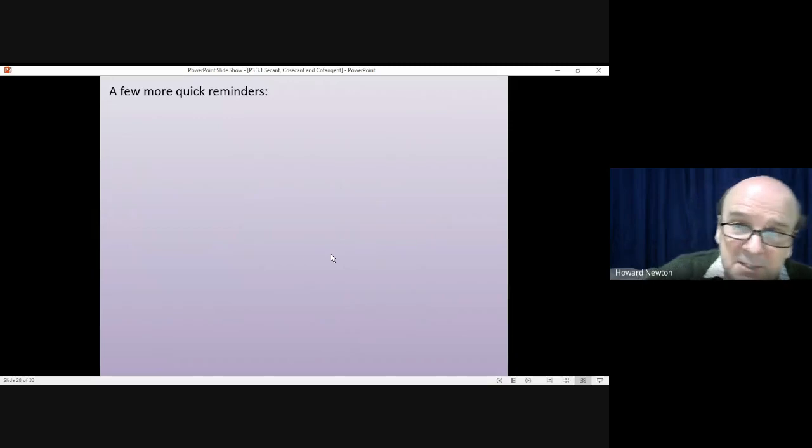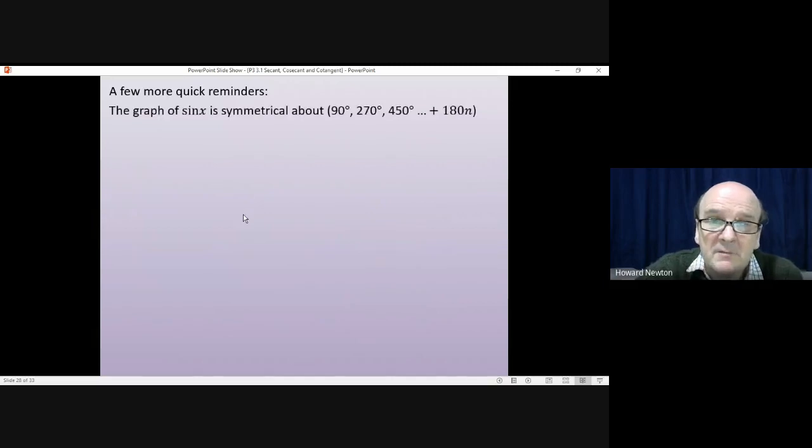A few more quick reminders that you will need to remember to do the questions that are coming. There's quite a lot of them, actually. First of all, the graph of sine x. It's symmetrical about various points. It's symmetrical about 90 degrees, about 270, about 450, and you could keep on adding at 180 degrees, multiples of 180. And you'd get more angles around which it's symmetrical.